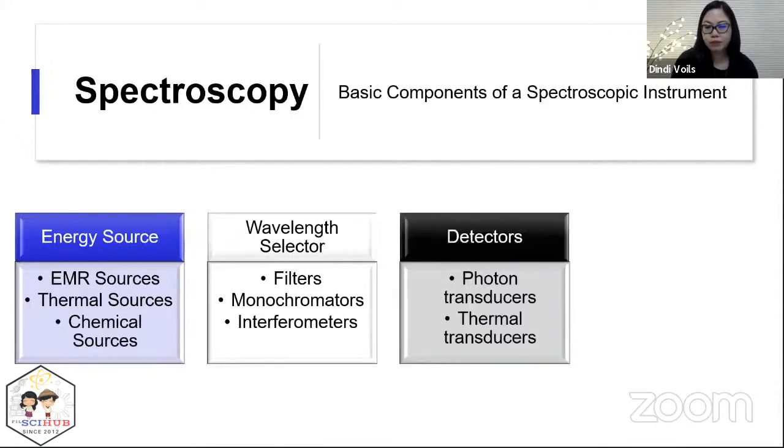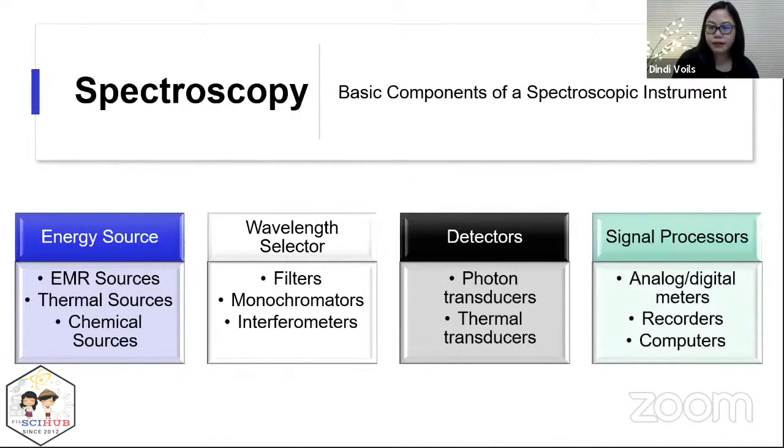Detectors, which can be photon transducers or thermal transducers. And then finally, you have a signal processor, analog meters, recorders and computers. And normally you have a software processor that processes the signal that comes from the detector.